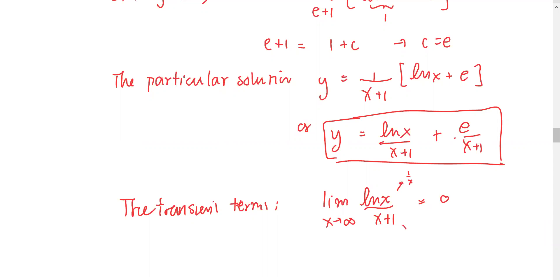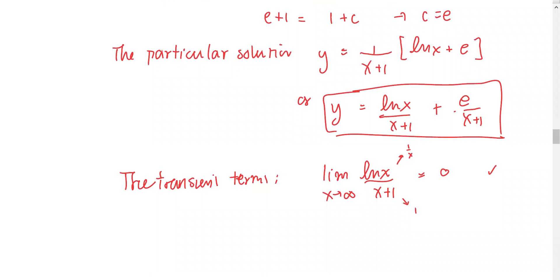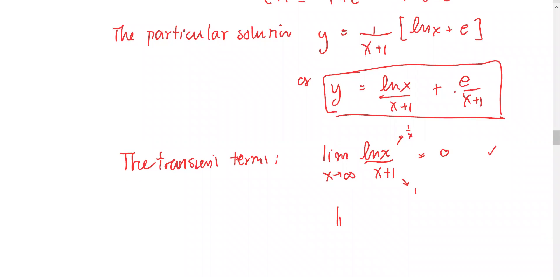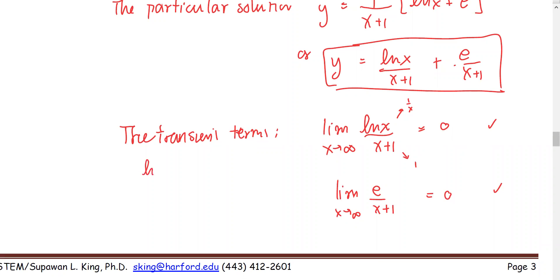Taking the derivative of the numerator gives 1 over x, and the derivative of the denominator gives 1, so we find the limit of 1 over x, which approaches 0. So this term is a transient term. The limit of e over (x+1) as x approaches infinity also gives 0. Therefore both terms, natural log x over (x+1) and e over (x+1), are transient terms, and in the long term the solution y will approach 0.